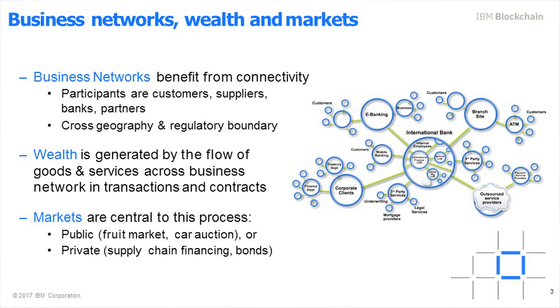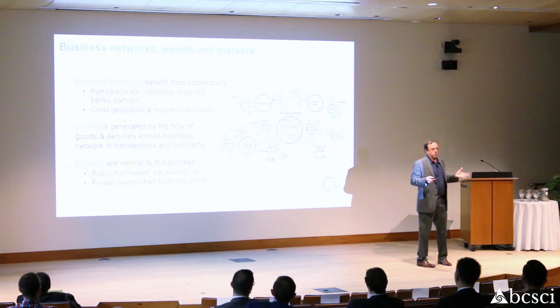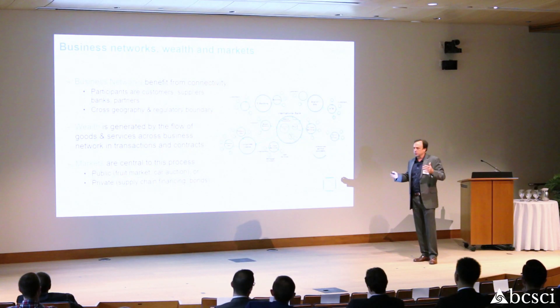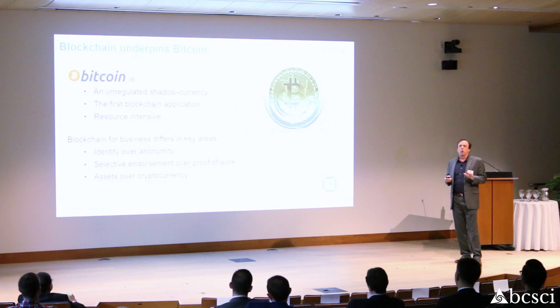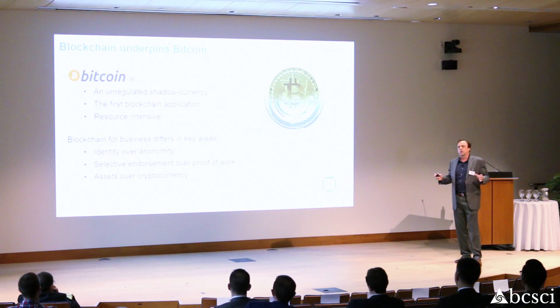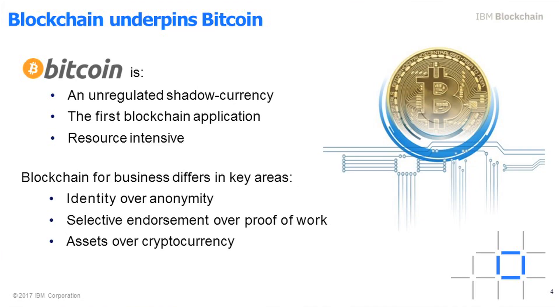Within IBM, we divide our markets into two basic categories: one is public, like an auction, and the other is private, which would be something like supply chain financing or bonds. Most people know what Bitcoin is — that was really the first well-known application for blockchain. Blockchain underpins Bitcoin.